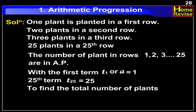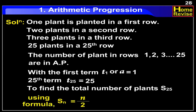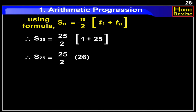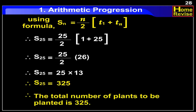Now, to find the total number of plants, that is S25, we use the formula: SN is equal to n upon 2 into (T1 plus TN). Therefore, S25 is equal to 25 upon 2 into (1 plus 25), which is equal to 25 upon 2 into 26. Therefore, S25 is equal to 25 into 13, which is equal to 325. Therefore, the total number of plants to be planted is 325.